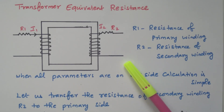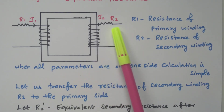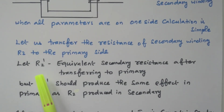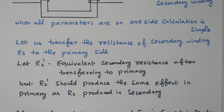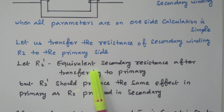Not only resistors — we can transfer resistors, current, voltage, everything from one side to the other. Let us transfer the resistance. We will see the resistance of secondary winding R2 transferred to the primary side. So R2 dash is the equivalent secondary resistance after transferring to the primary. R2 is the resistor available in the secondary winding; while transferring to the primary it becomes R2 dash — the equivalent secondary resistance referred to the primary.